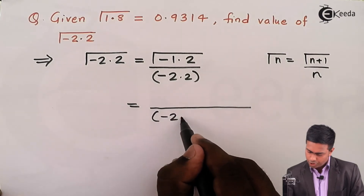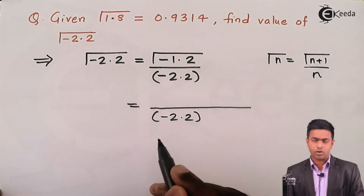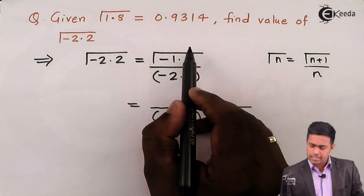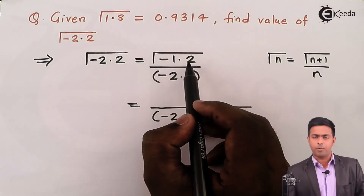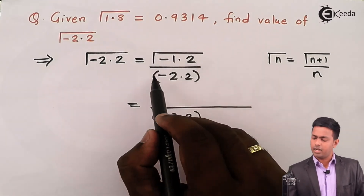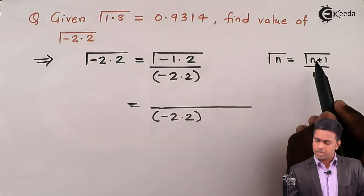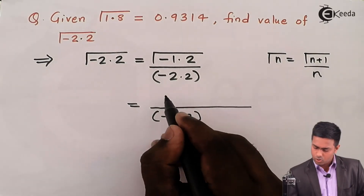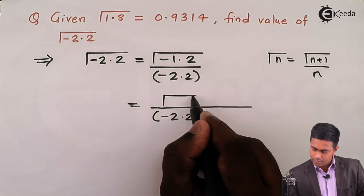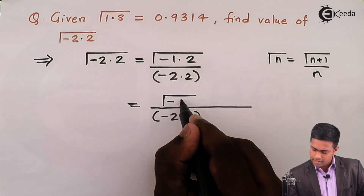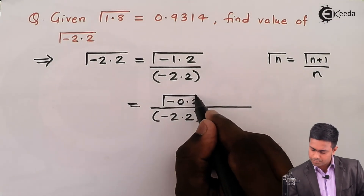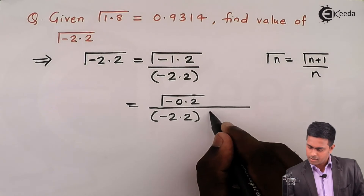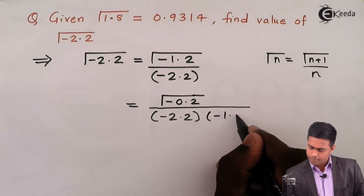The -2.2 constant remains as is, and for gamma(-1.2) we apply the same formula again: gamma(-1.2) = gamma(-1.2 + 1) / (-1.2) = gamma(-0.2) / (-1.2). So we now have gamma(-2.2) = gamma(-0.2) / [(-2.2) * (-1.2)].